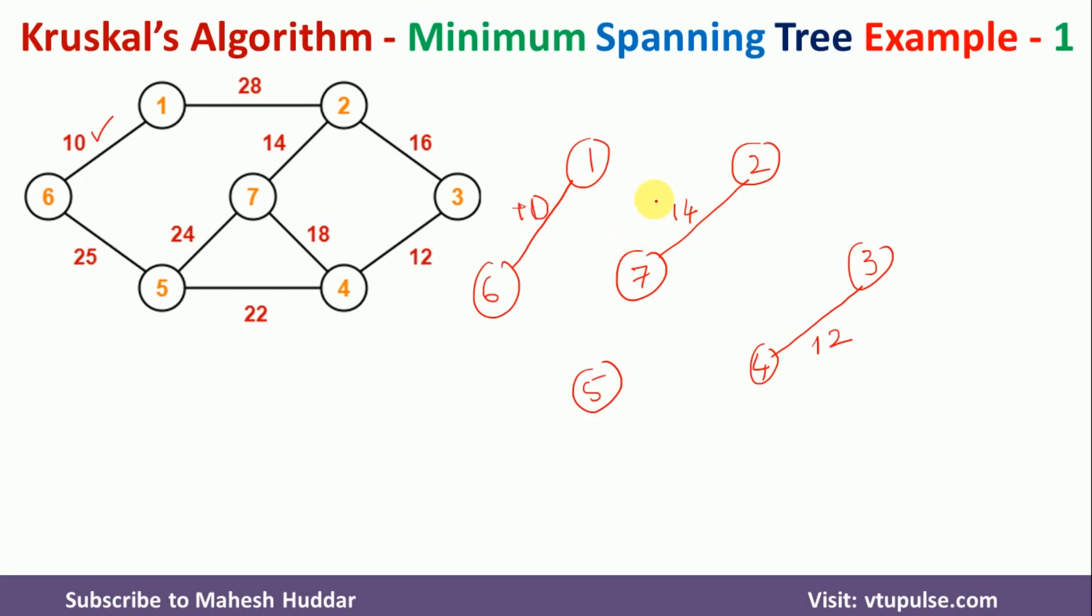Among the remaining edges, again, we have an edge between 2 and 3 which is having the minimum weight of 16. So we will draw that particular thing here.